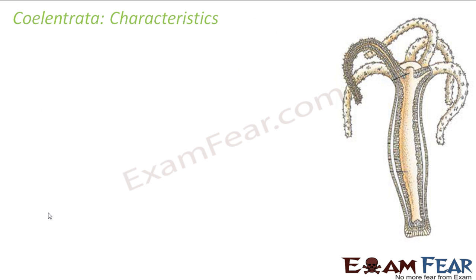Let us go to the next class — Coelenterata. What does the word Coelenterata mean? 'Coelo' means hollow, and 'entera' means gut. So these are organisms with a hollow gut. The gut refers to the digestive tract — the portion of the alimentary canal is known as the gut.